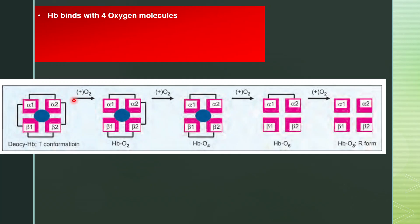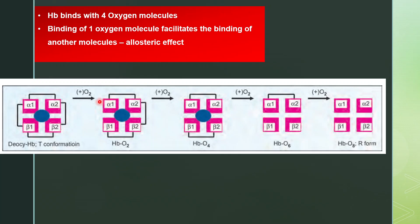When hemoglobin binds with oxygen, total hemoglobin binds with four molecules of oxygen — one polypeptide binds with one molecule. The binding of one oxygen molecule facilitates the binding of another oxygen molecule; this is known as the allosteric effect. When the first oxygen molecule binds, it breaks one of the salt bridges, causing a structural change. The polypeptides become more free and open up, which facilitates the binding of another oxygen molecule.